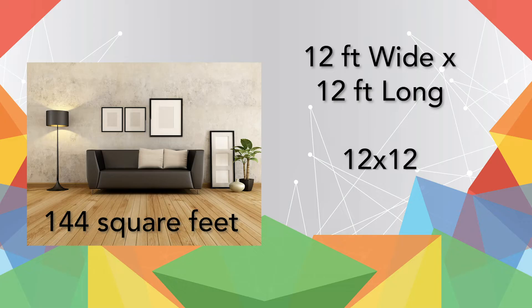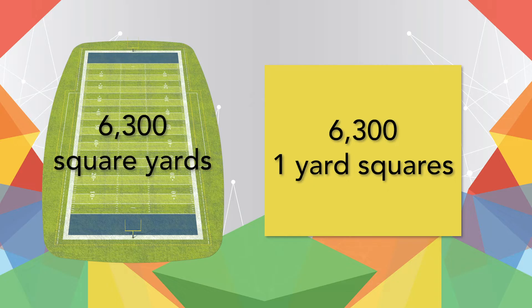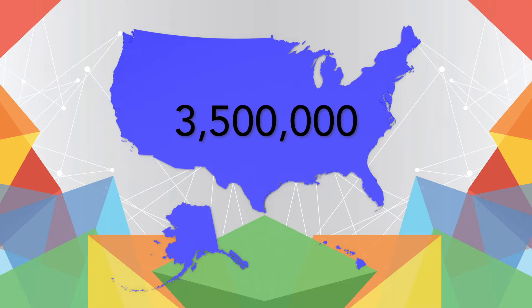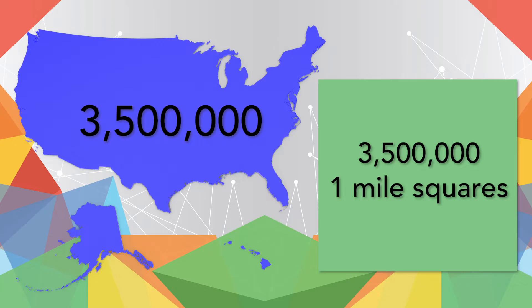Multiply the sides together — 12 times 12 — and you get 144 square feet. A football field's area is about 6,300 square yards, meaning it would take 6,300 one-yard squares to cover an entire field. How much area do you think the United States has? If you guessed three million five hundred thousand square miles, then you're amazing! That's right — it would take 3,500,000 one-mile squares to cover all the land in the US.